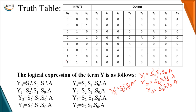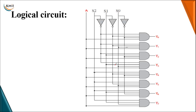Now we are going to draw the logical diagram of the 1-to-8 demultiplexer. This shows the logical diagram of the 1-to-8 demultiplexer with 8 output lines. Each AND gate gives one of the outputs — starting from Y0 to Y7. All AND gates have a 4th input connected commonly to the data input A, so A acts as one input of all 8 AND gates.